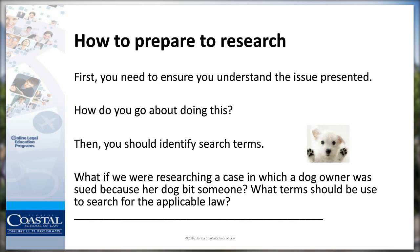We've talked a little bit about knowing the different authority that's out there, because it's really difficult to conduct research if you don't know where you will be doing the research. There's also the key part of understanding the topic you're going to be researching. As attorneys, we might have the opportunity to practice in a new area of the law, or be given all types of different things to research, and we need to be efficient—not only with our time, but with our use of electronic programs because of the costs associated with them.